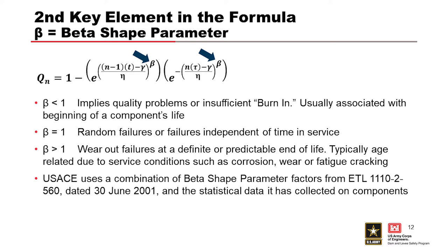A second key parameter element of the formula is the beta or shape parameter. It's really the slope of that curve at any point in time. A beta of less than one implies quality problems or insufficient burn-in, sometimes called infant mortality. A beta of one is more of a random-type failure.